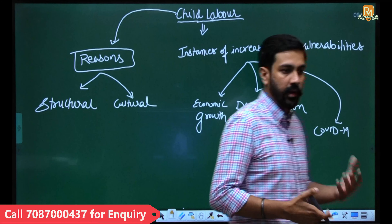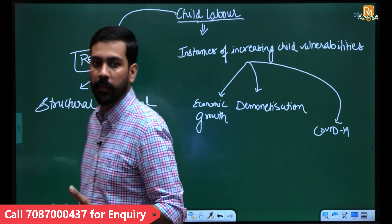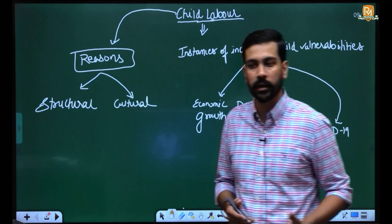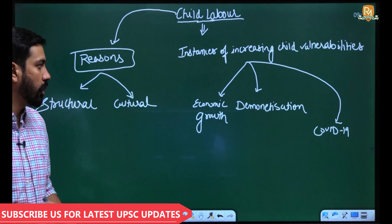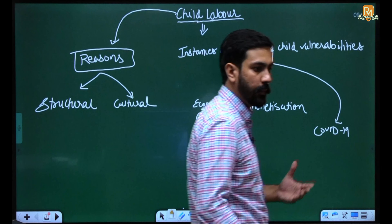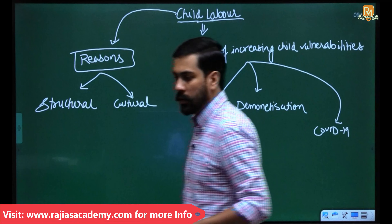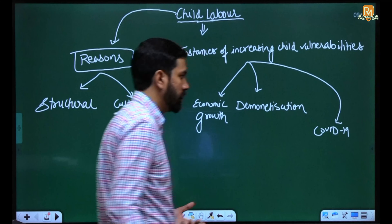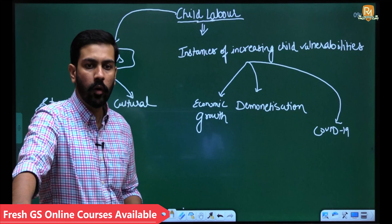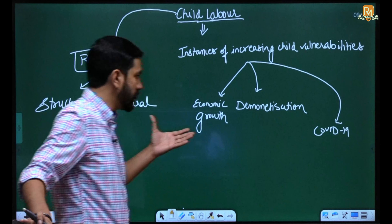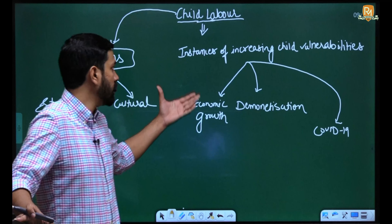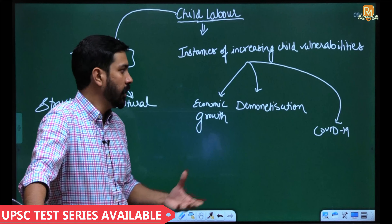Next is demonetization, after which the worst-affected sector was the informal sector where physical labor is employed. The recent one is COVID-19 — you must have read in The Hindu where the Supreme Court said the center needs to do something about increasing child vulnerabilities: rising cases of orphans who have lost their parents and have nobody to look after them. These are the recent instances that have contributed to the rise in child labor.